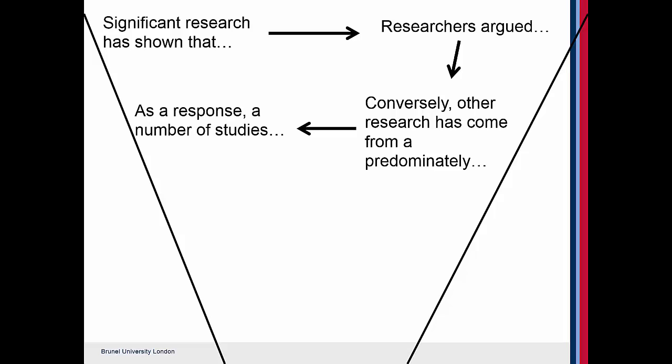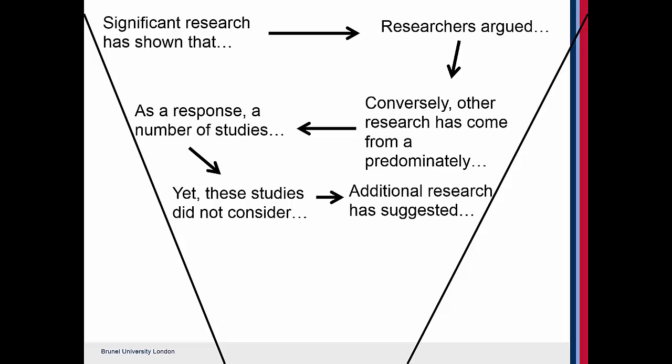You might take this further by looking at how other studies have responded to this. Saying something like 'yet these studies did not consider…' highlights the limitations of those particular studies. You might also elaborate by saying 'additional research has suggested…', and then explain what your specific study will be looking at as a consequence.